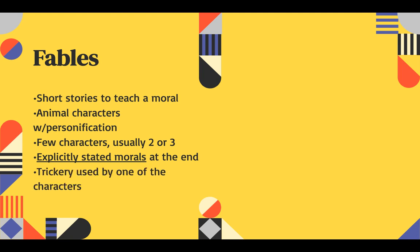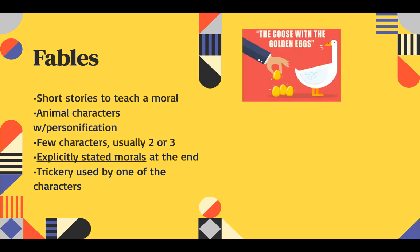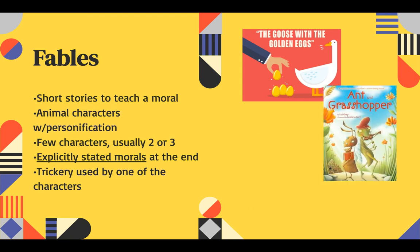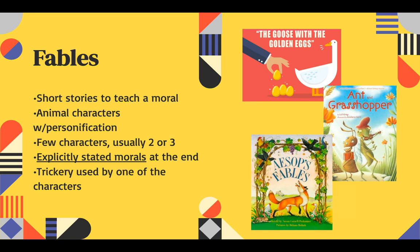Trickery is usually used by one of the characters — usually the bad character tries to play a trick on the others, and usually their trick doesn't go over well. They're the ones that learn some sort of a lesson. Some examples of fables include The Goose with the Golden Eggs, The Ant and the Grasshopper, and Aesop's Fables. Aesop's Fables is a collection of fables and probably the most popular. Aesop was a Greek storyteller, and all of his stories have animal characters and show some sort of moral at the end.